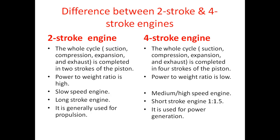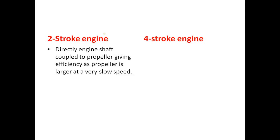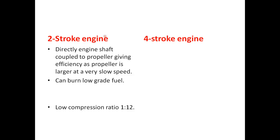In a two-stroke engine, the engine shaft is directly coupled to the propeller, giving higher efficiency as the propeller operates at a very slow speed. The propeller used here is a ship propeller. Two-stroke engines can burn low-grade fuel and have a low compression ratio of 1 to 12.